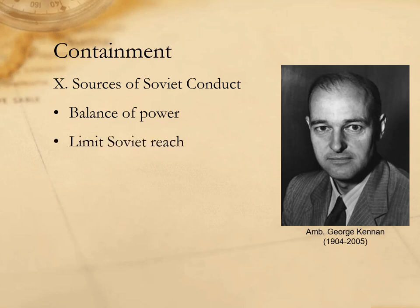Second, Kennan argued in favor of reducing the Soviet Union's ability to project power outside of its own borders. This would most immediately be achieved by exploiting tensions within the Soviet sphere of influence — essentially a policy of divide and conquer. We see this in American efforts to improve relations with communist countries like Tito's Yugoslavia, or later in improving relations with communist China. Kennan believed that nationalism would prove more durable than communism, and supporting nationalist efforts inside communist states would naturally reduce support for Soviet expansion.